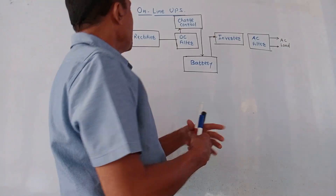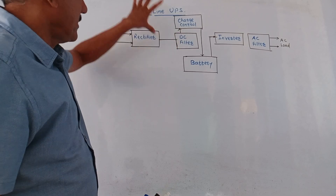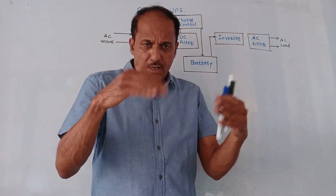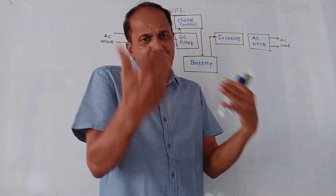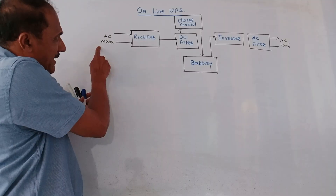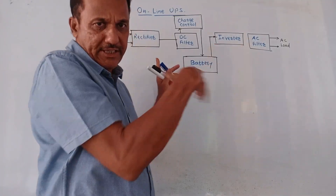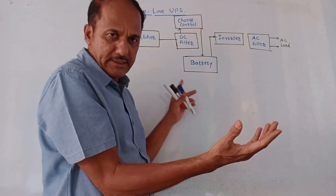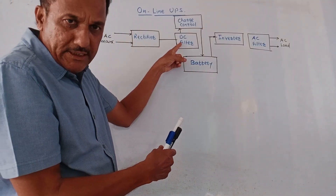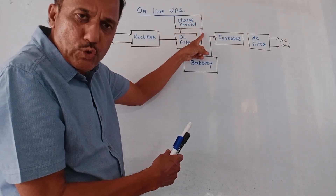The next part is online UPS. As the name indicates, the UPS is always connected to the main supply. AC mains output is given to the rectifier, which converts it into DC. Then we use a DC filter, and its output is given to the charge control unit, which is directly connected to the battery. Charging of the battery is controlled whenever the power supply is connected.